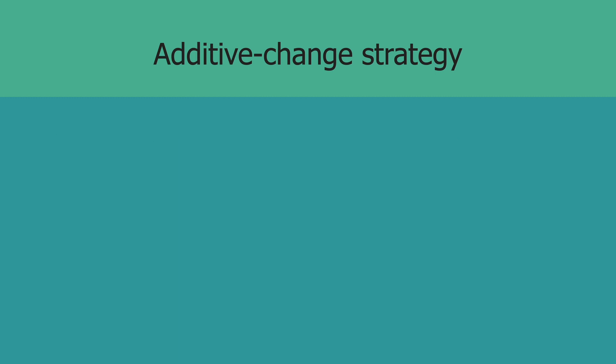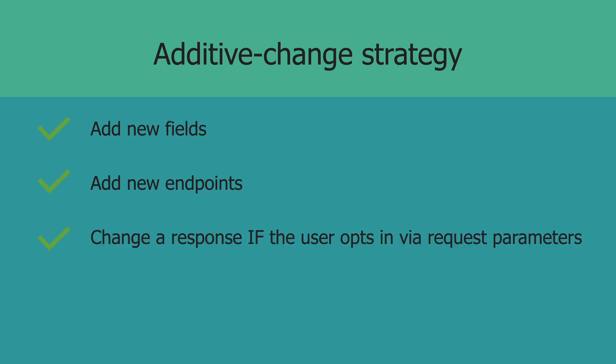Now, having said that, there are a few things that you are allowed to do. You can add new fields, you can add new endpoints, and you are allowed to change a response field if the user chooses to opt in to that change via request parameters. That last one is a bit of a contradiction, isn't it? Well, not really. The main idea here is to not have any breaking changes. As long as users have the chance to opt in, we are not breaking any existing code.